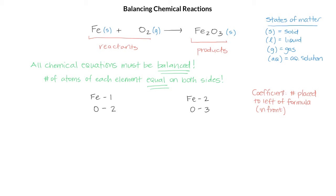We have 1 iron on the left side and 2 iron on the right side. So what can we place in front of the iron on the reactant side so that we have the same number of iron atoms on both sides? It looks like we can try 2, and if we do that, then we have 2 iron on the left and 2 iron on the right. So that is balanced.